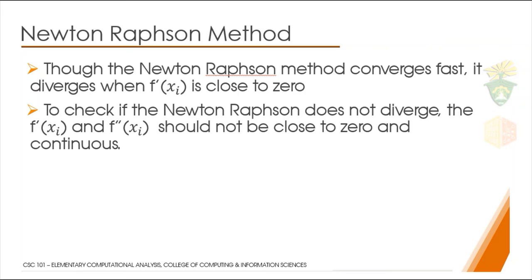To check if Newton-Raphson does not diverge, to check if Newton-Raphson will find the solution, check if f'(x), the derivative of the derivative, is not close to zero. If it's close to zero, it means there's a possibility that it won't get the true solution.